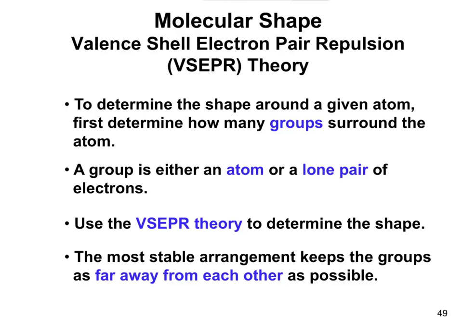The valence shell electron pair repulsion theory, or also known as the VSEPR theory, talks about molecular shapes.